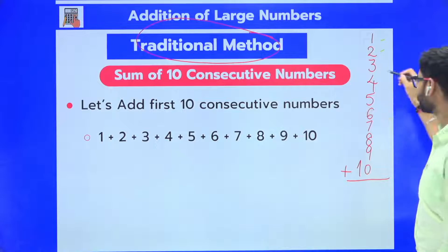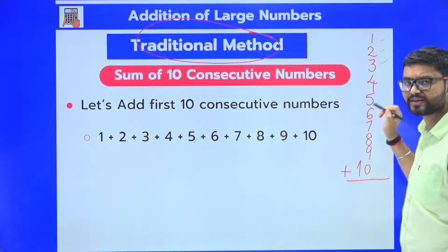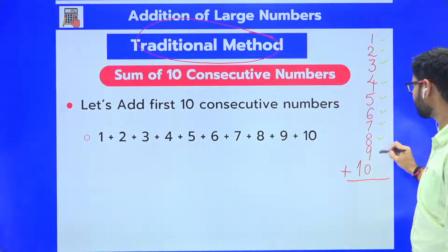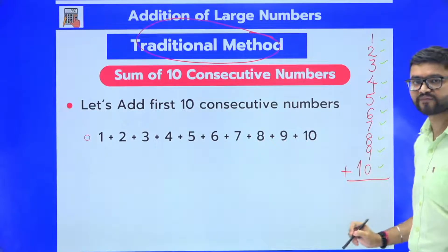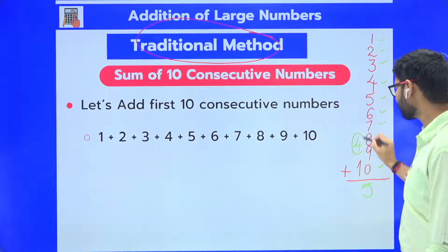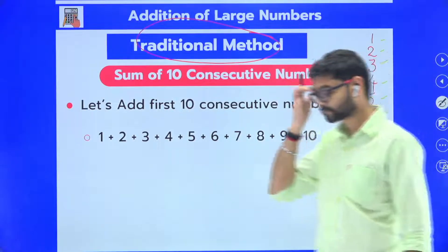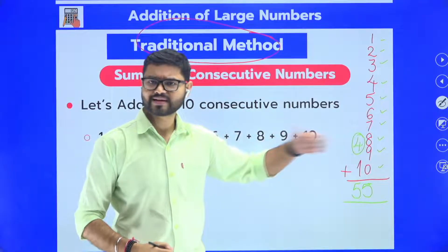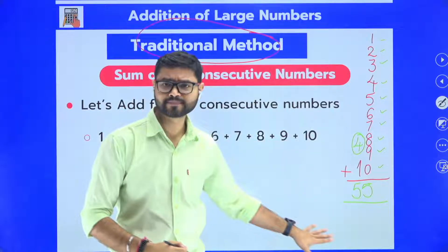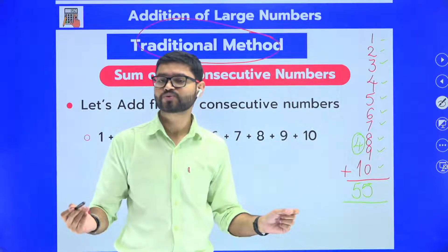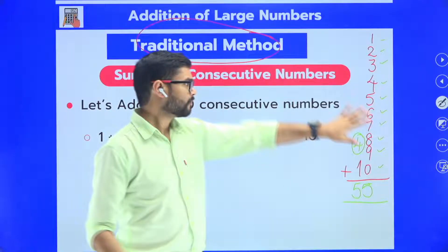So: 1 plus 2 is 3, plus 3 is 6, plus 4 is 10, plus 5 is 15, plus 6 is 21, plus 7 is 28, plus 8 is 36, plus 9 is 45, plus 10 is 55. Write 5, carry 4 — actually 55 is the answer. That is how you have learned to add. It will take some time and it is lengthy; you need paper and pencil.